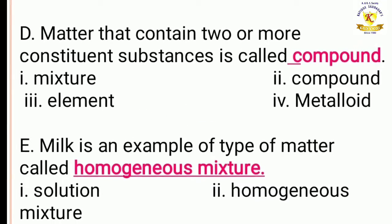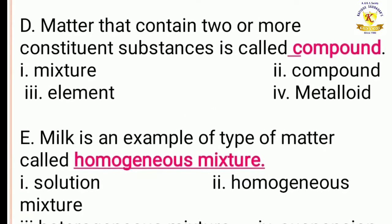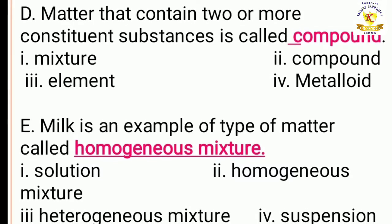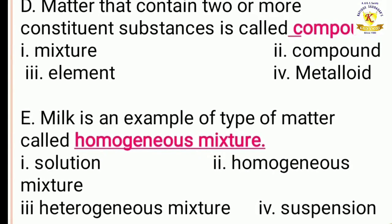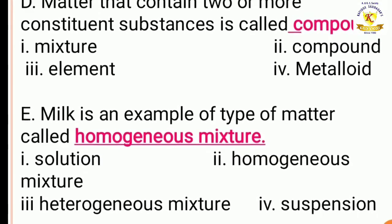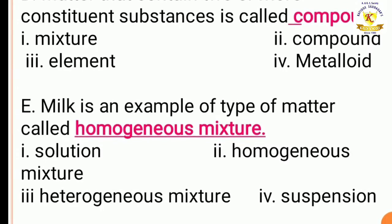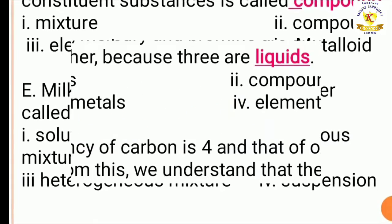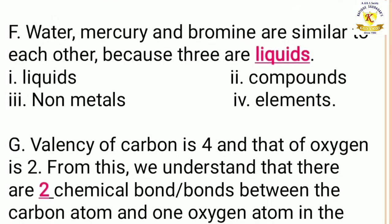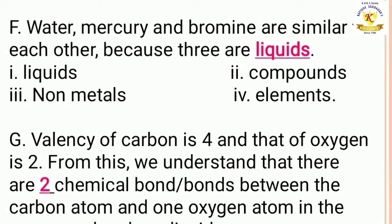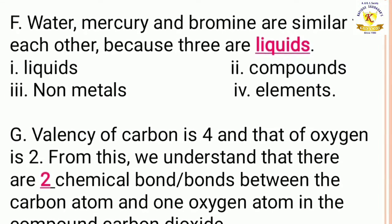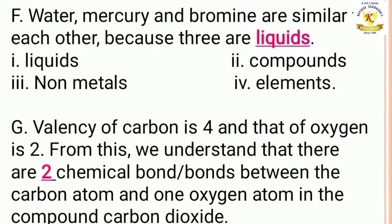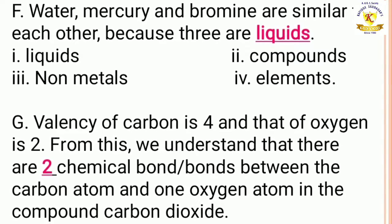Matter that contains two or more constituent substances is called compound. Milk is an example of a type of matter called homogeneous mixture. Water, mercury and bromine are similar to each other because these three are liquids.